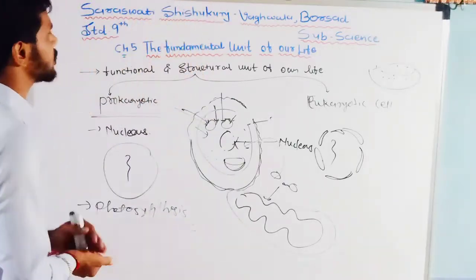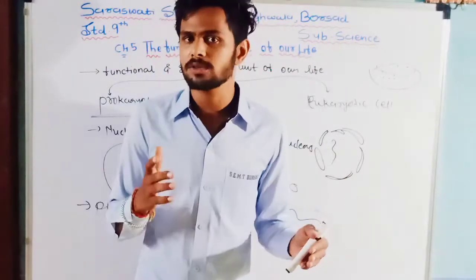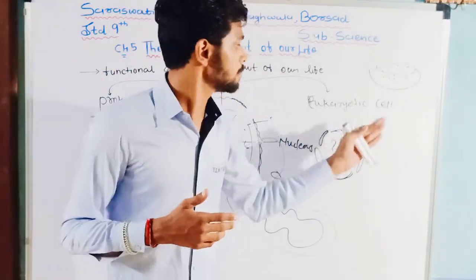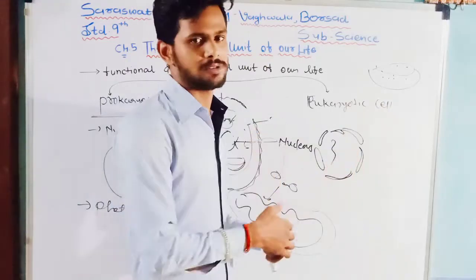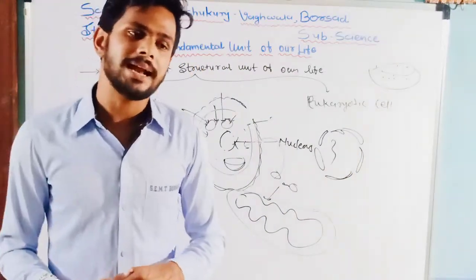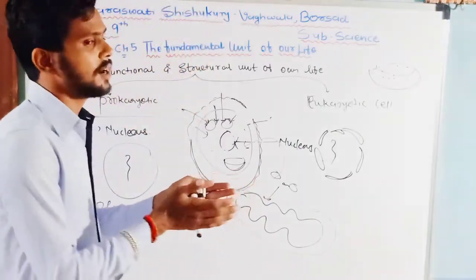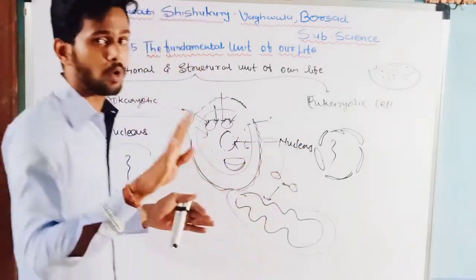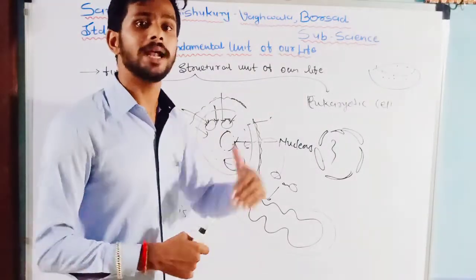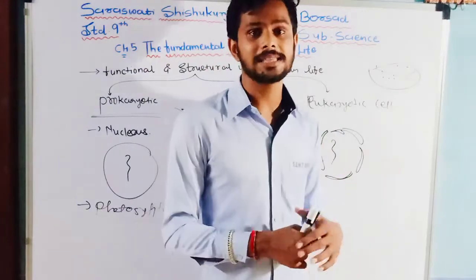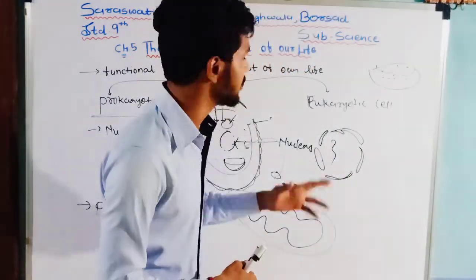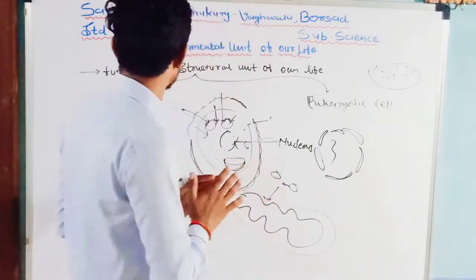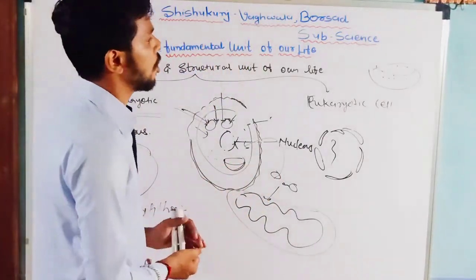That is all about cell organelles. Next we talked about cell division, which is of two types: mitosis and meiosis. Mitosis is responsible for growth, while meiosis is responsible for replacement of dead or inactive cells. In mitosis, the mother cell divides into two daughter cells, and the number of chromosomes in the mother cell remains the same in the daughter cells. In meiosis, two consecutive divisions take place, and the daughter cells have half the chromosomes of the mother cell.